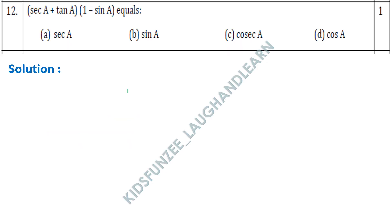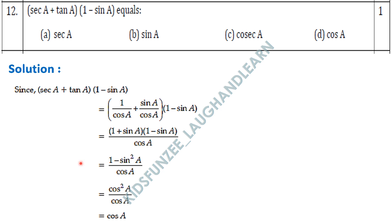Question 12: (sec A + tan A)(1 - sin A) = ? Here we have to convert sec A and tan A into sin and cos — that will be the easiest way to solve this question. We convert: sec A = 1/cos A, and tan A = sin A/cos A, multiplied by (1 - sin A).